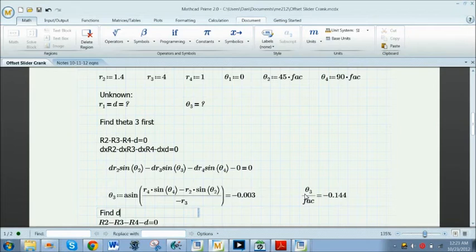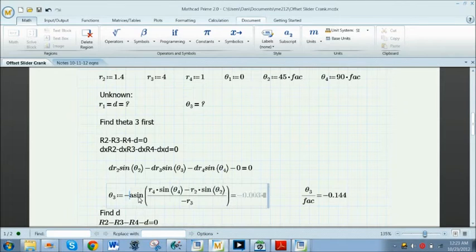It gives a value between negative 90 degrees and 90 degrees, or negative pi over 2 to pi over 2. We want to use the positive value of this, so I'm going to put a negative symbol in front of that so that I'm using the positive value.